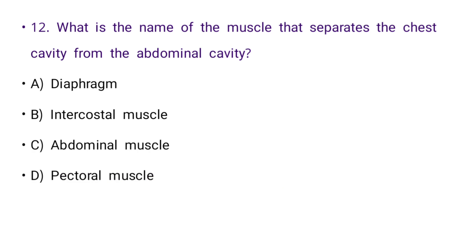Next: What is the name of the muscle that separates the chest cavity from the abdominal cavity? Options: diaphragm, intercostal muscle, abdominal muscle, or pectoral muscle. The right answer is A: diaphragm.